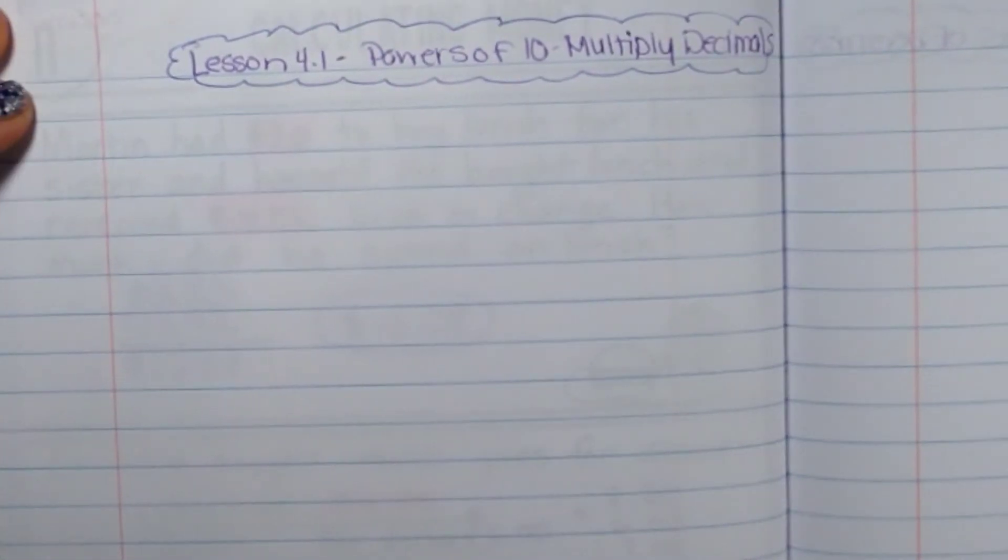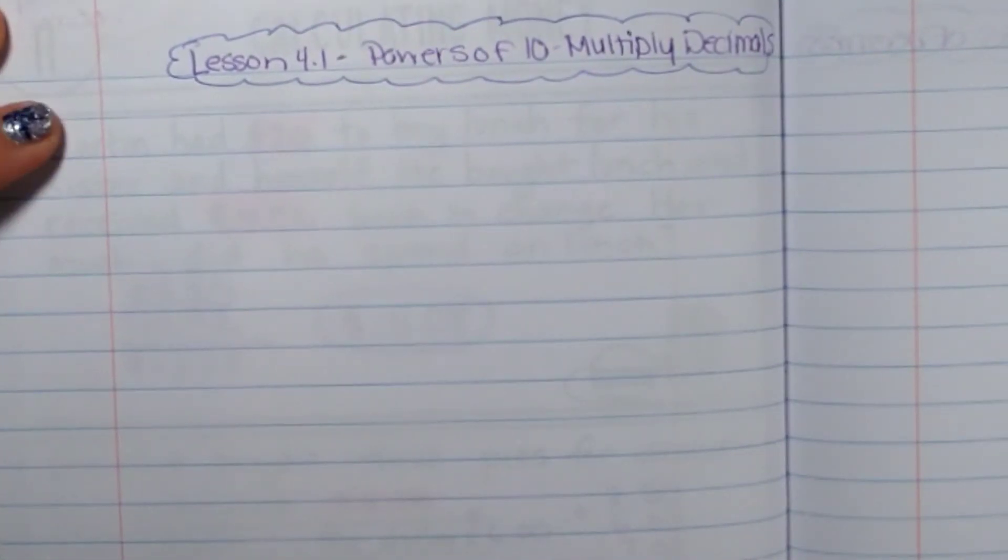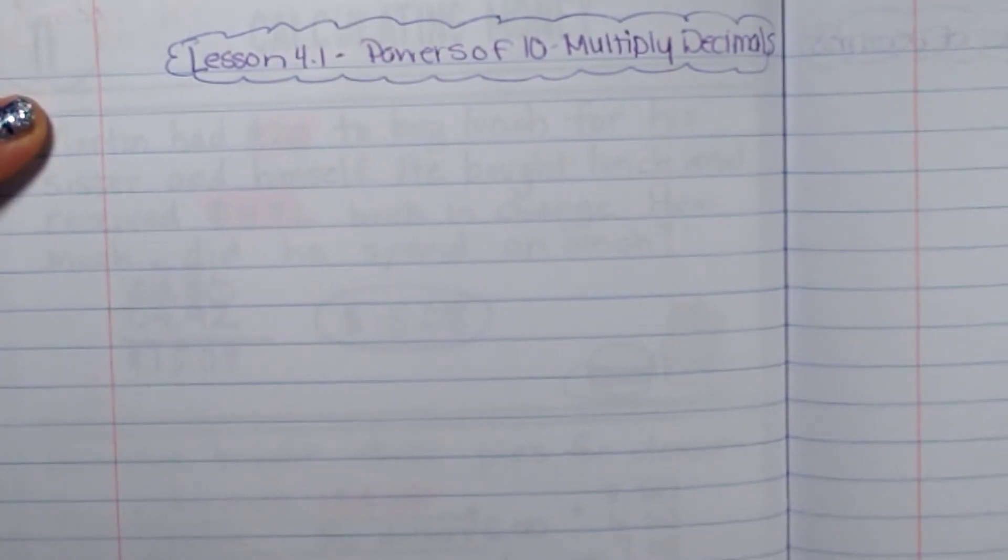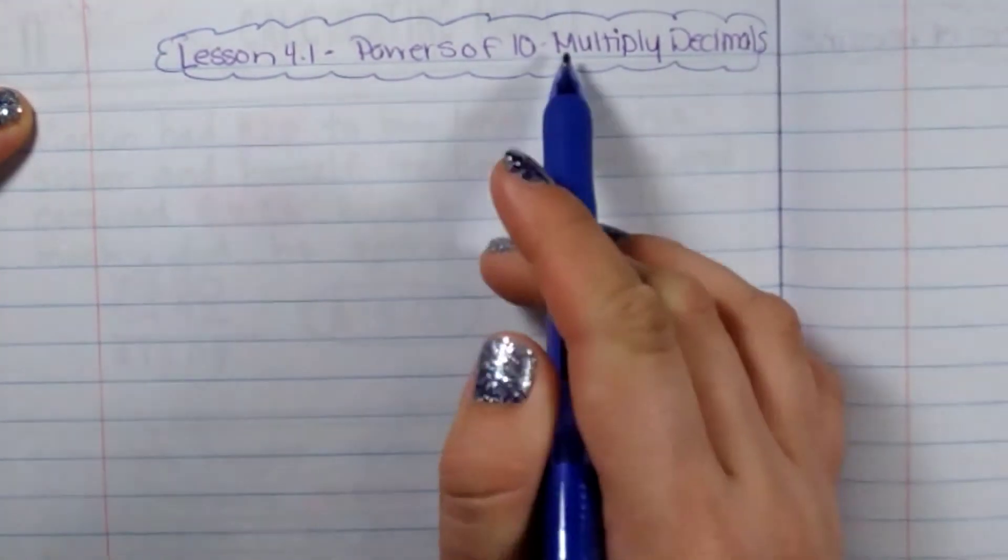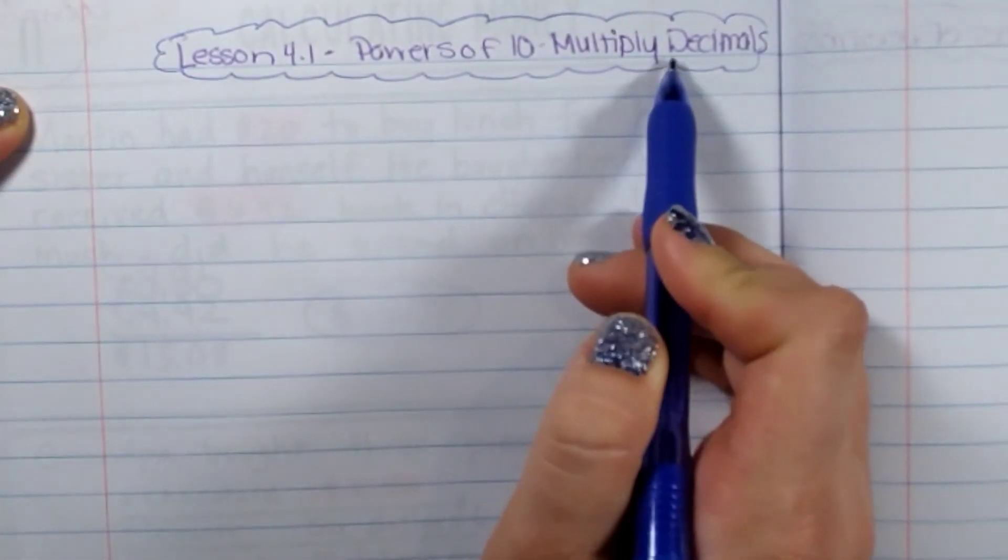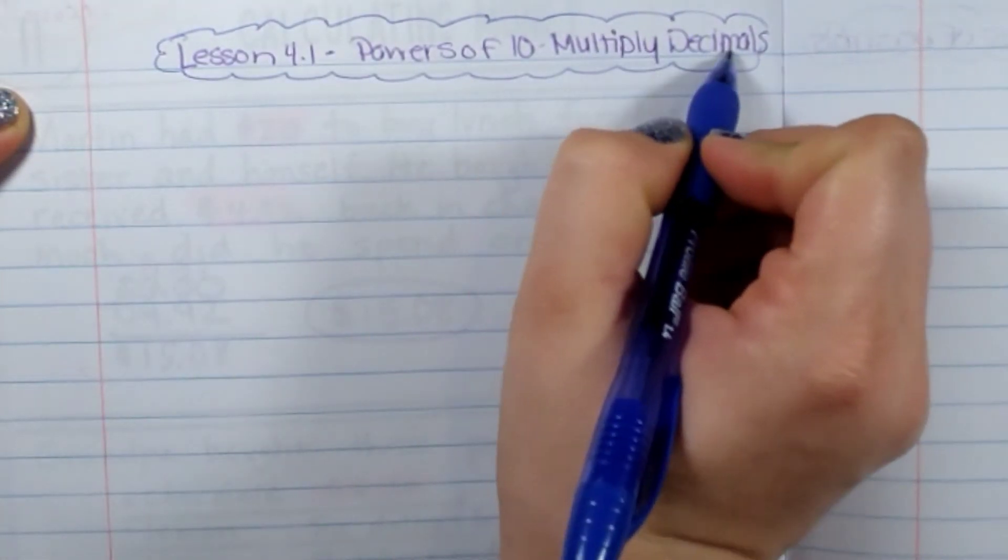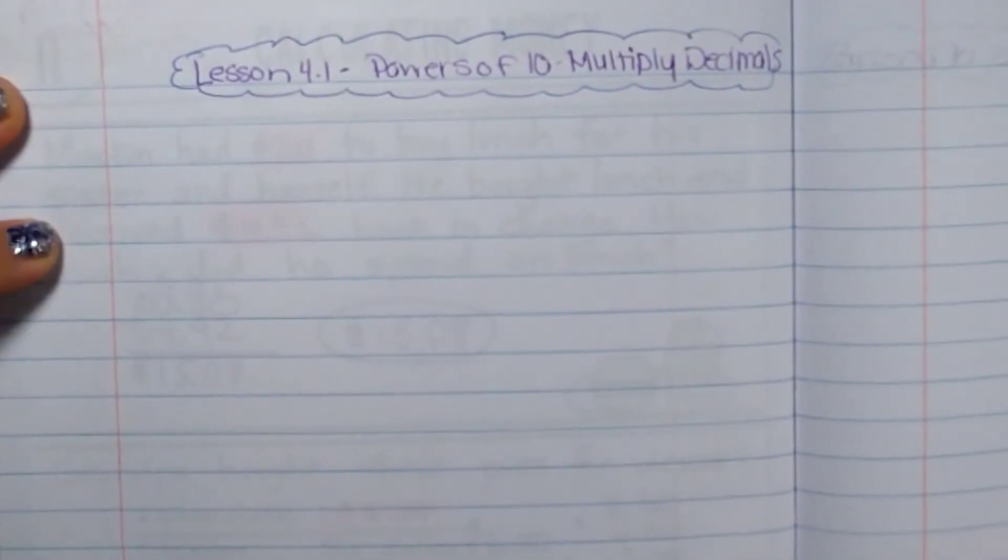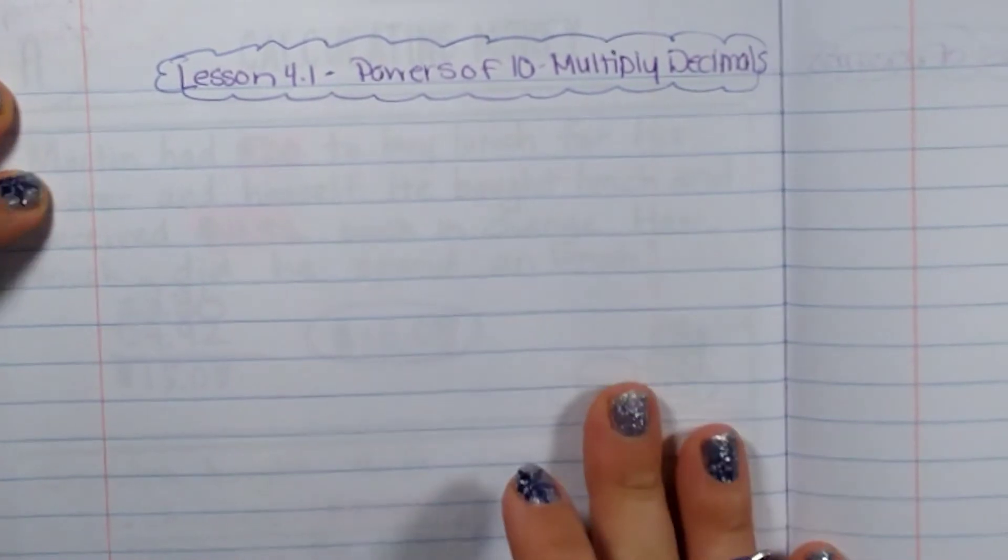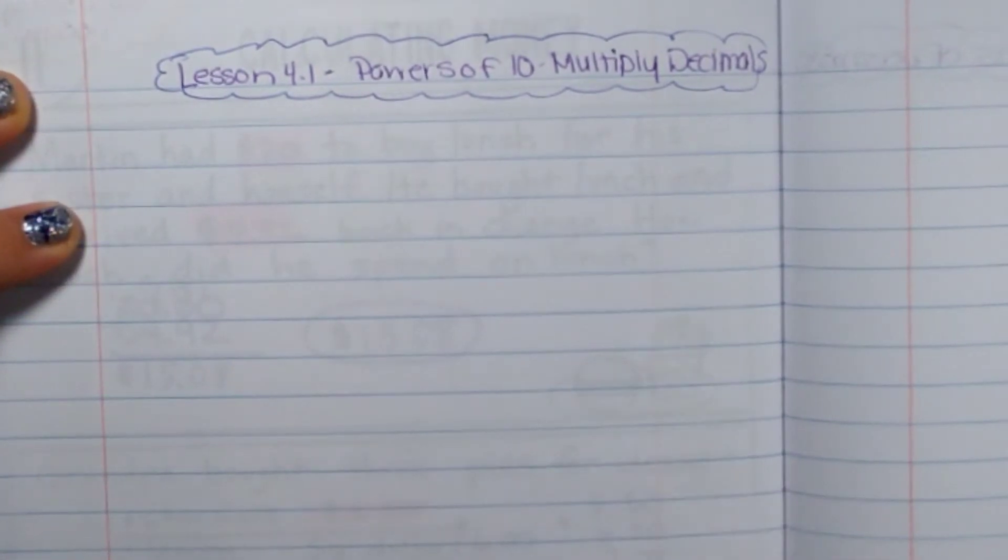Hi friends, we are moving on to a new chapter which is multiplying decimals and we're going to start like we have with all the other chapters talking about powers of 10. So we're going to be multiplying decimals with powers of 10. Your title of your notes will be lesson 4.1 powers of 10 multiply decimals.